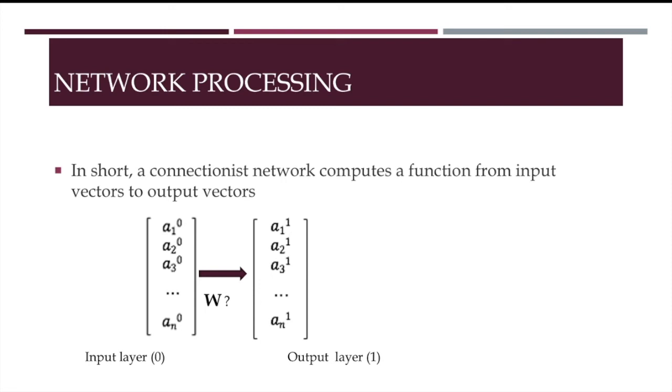For a network with only one input layer and output layer, the solution consists in coming up with an appropriate set of weights for the connections between the two layers.